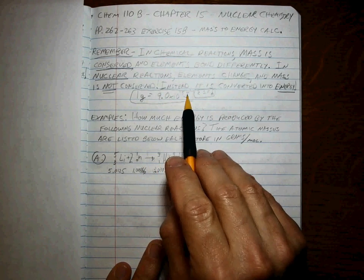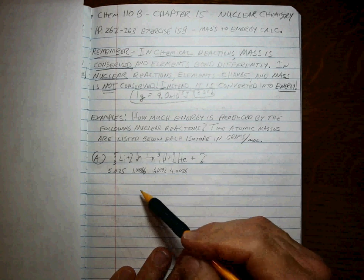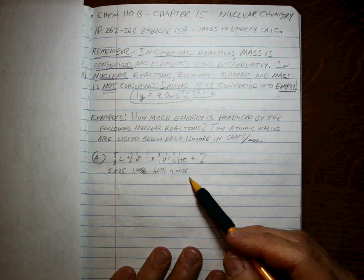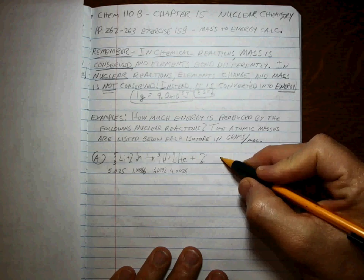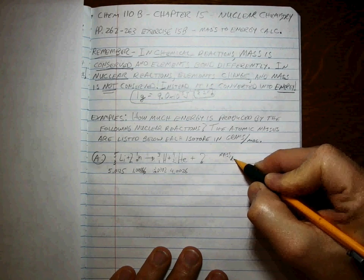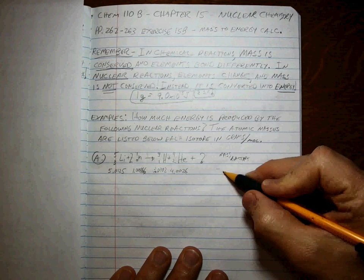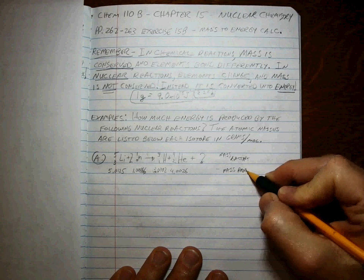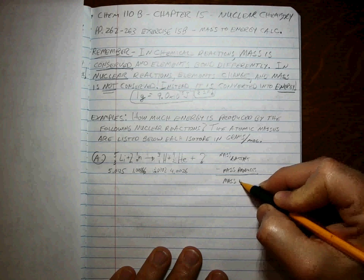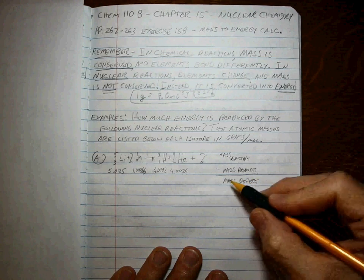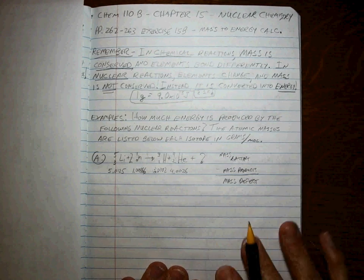It's 1 gram is equal to 9.0 times 10 to the 13th joules. Okay, so the key to this is, as always, adding up the reactants, subtracting the products, and then using the conversion. So it's mass reactants minus mass of the products equals the mass defect, meaning the mass that got converted into energy. So let's go ahead and do the problem here.